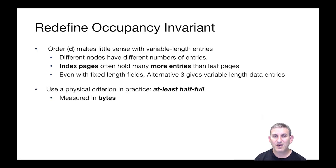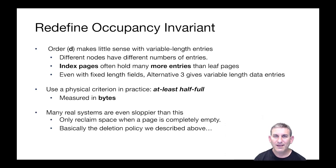So instead of talking about occupancy in terms of entries, we'll talk about occupancy in terms of a physical criterion of bytes. We're going to say that the B+ tree has to have its pages at least half full of index entries for internal nodes or data entries for leaf nodes. As we said with respect to deletion, many real systems are actually even sloppier than this — they'll allow pages to become less than half full and only reclaim space when the page is truly empty.